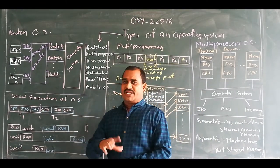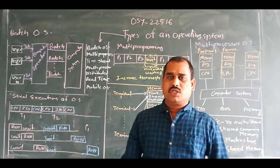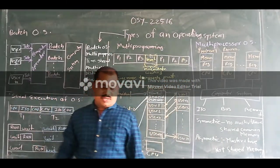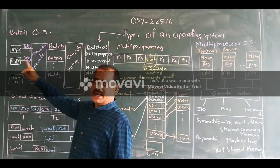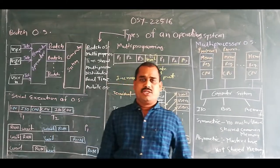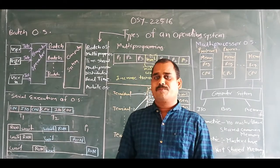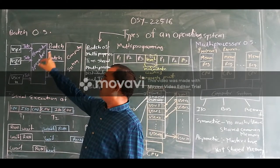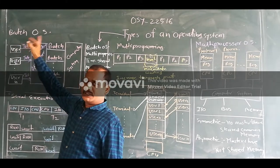Here, instead of interacting directly with the operating system and the programs, the user goes offline and prepares the jobs. After that, the user will submit their jobs to a computer operator. It is the component which sorts those jobs as per similar requirement or similar nature. Further, the computer operator creates the batches, so this operating system is called a batch operating system. Further, the batches are sent towards the computer system for further execution.